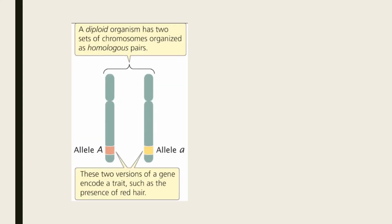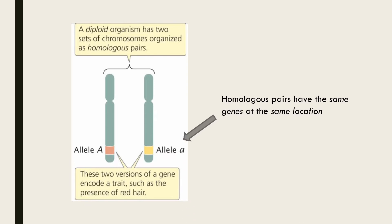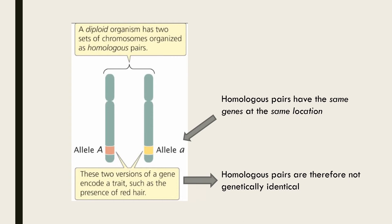The other thing to quickly clarify is what is meant by the term homologous pairs. A homologous pair refers to two chromosomes of the same number. They therefore have the same genes at the same location and are similar in size and shape. However they're not genetically identical as they may contain different alleles or versions of those genes.